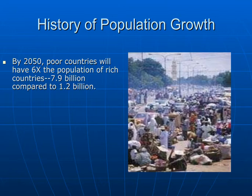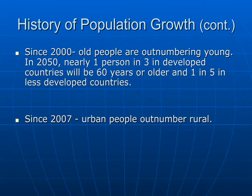By 2050, it's poor countries that will have 6 times the population of rich countries, estimated around 7.9 billion compared to 1.2 billion. And since 2000, we are also seeing that old people are outnumbering young. In 2050, nearly 1 person in 3 in developed countries will be 60 years or older, and 1 in 5 in less developed countries.